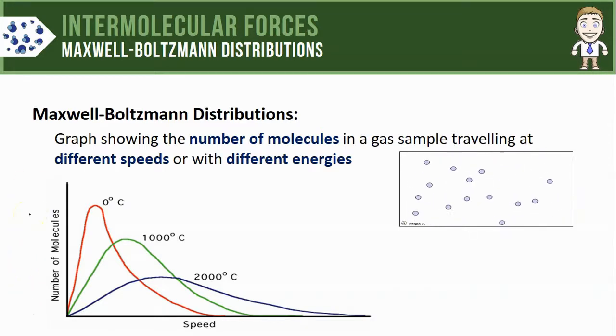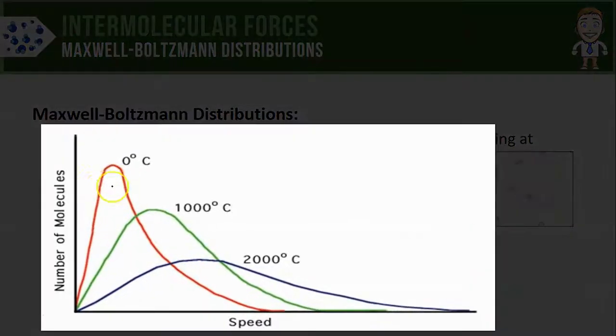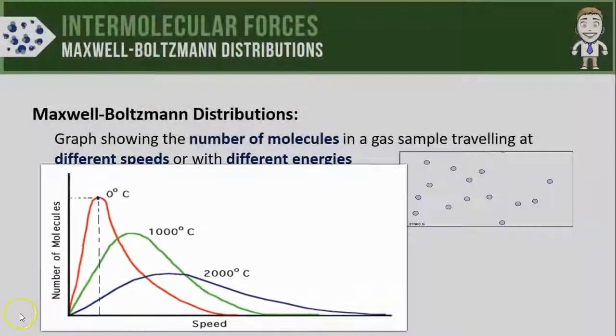Here's one way to read a Maxwell-Boltzmann distribution graph. Take a look at the red line representing a sample of gas at zero degrees Celsius. If we start by taking a look at the peak of that curve, we can see that this corresponds to the greatest number of molecules on the vertical axis. If I follow that same point downward, I would find on the horizontal axis the speed at which most of the molecules in the sample are traveling.